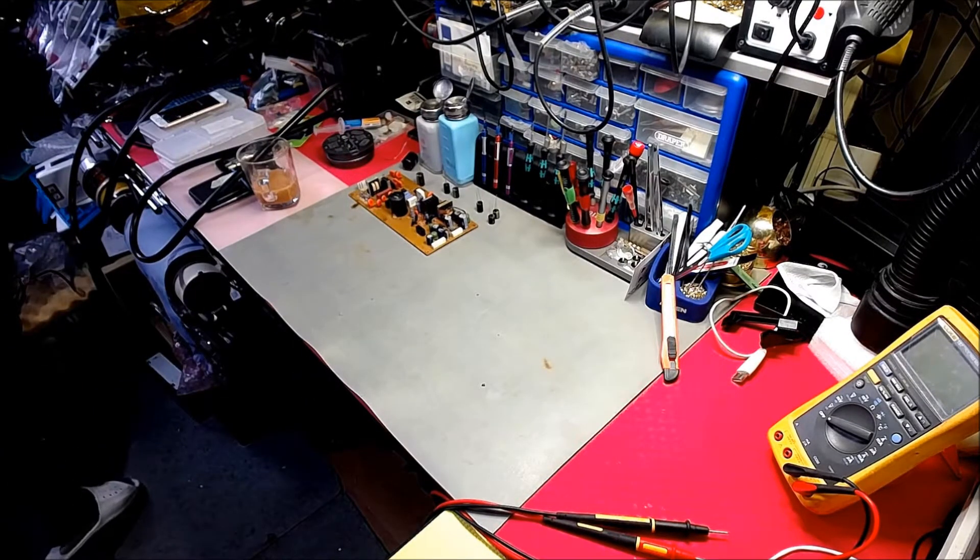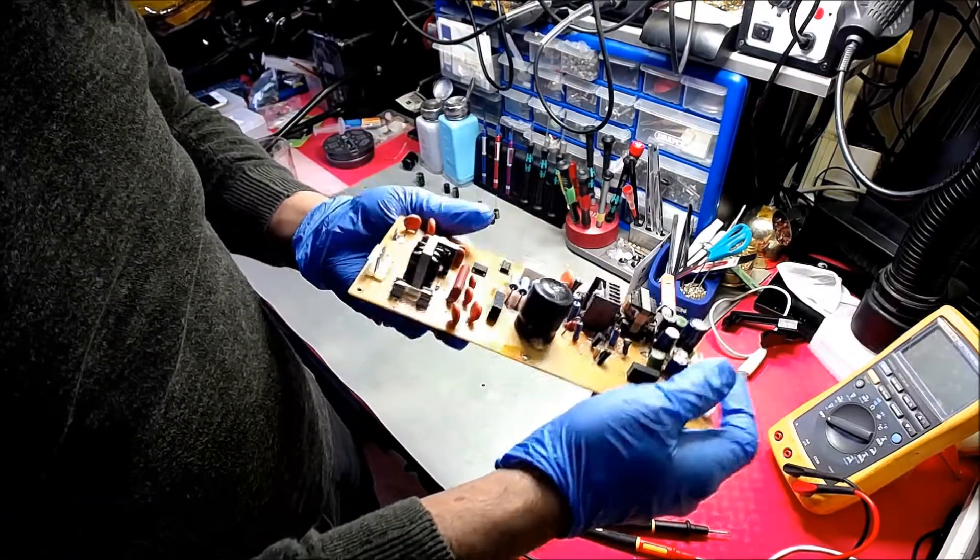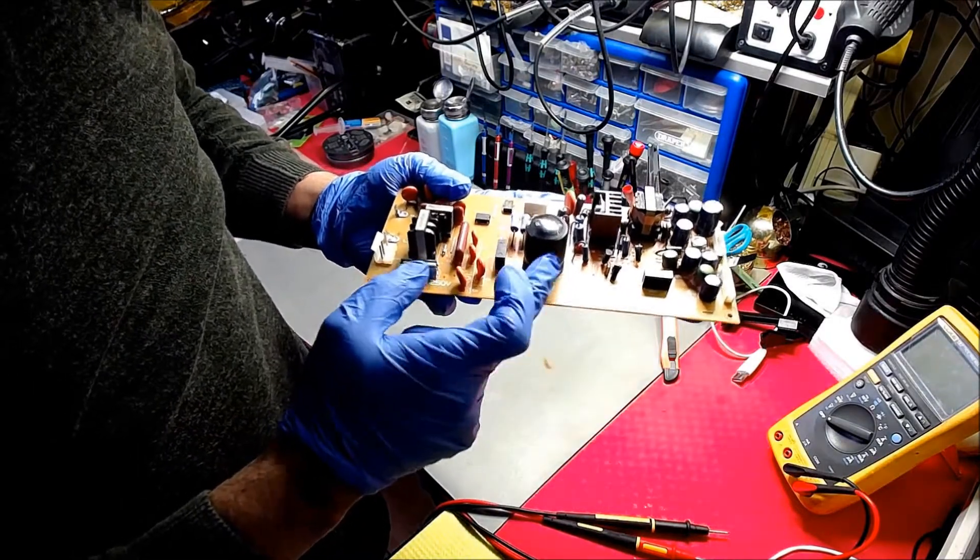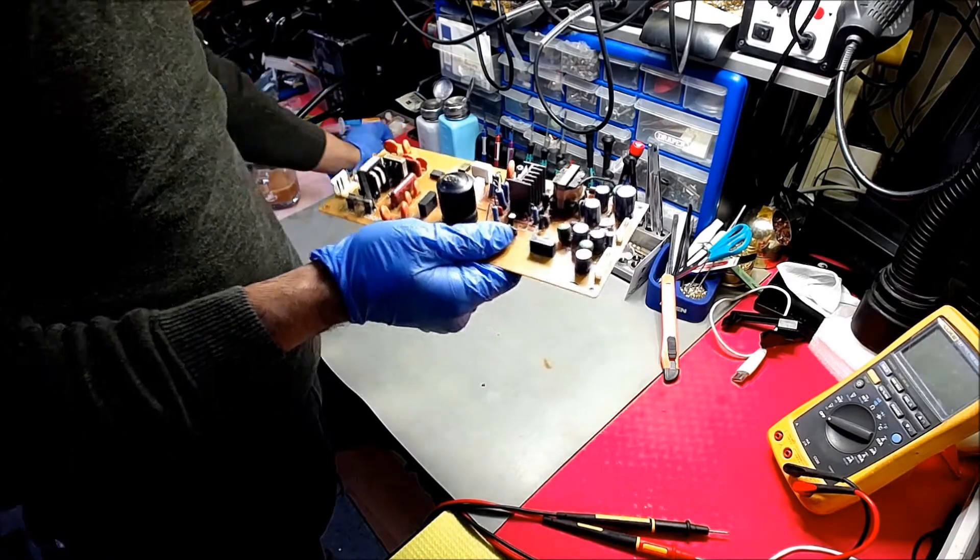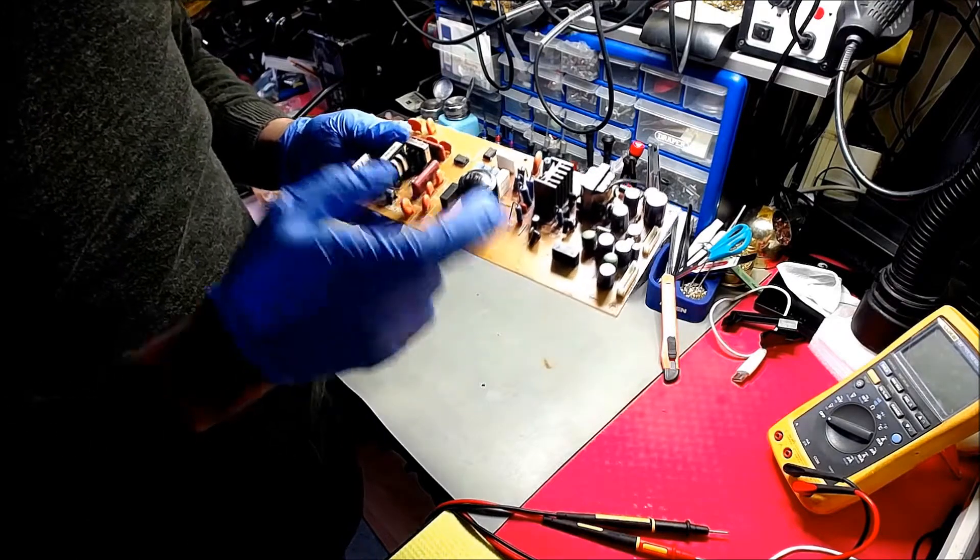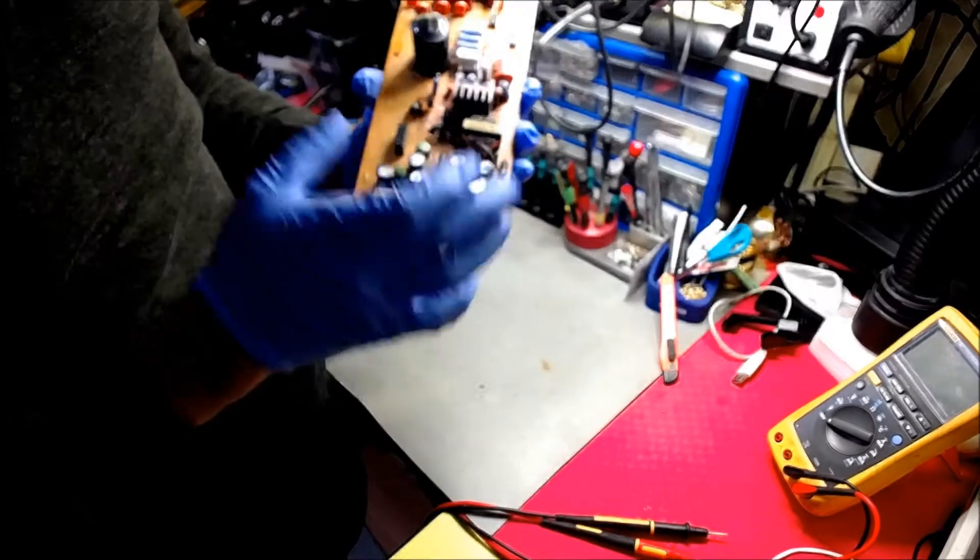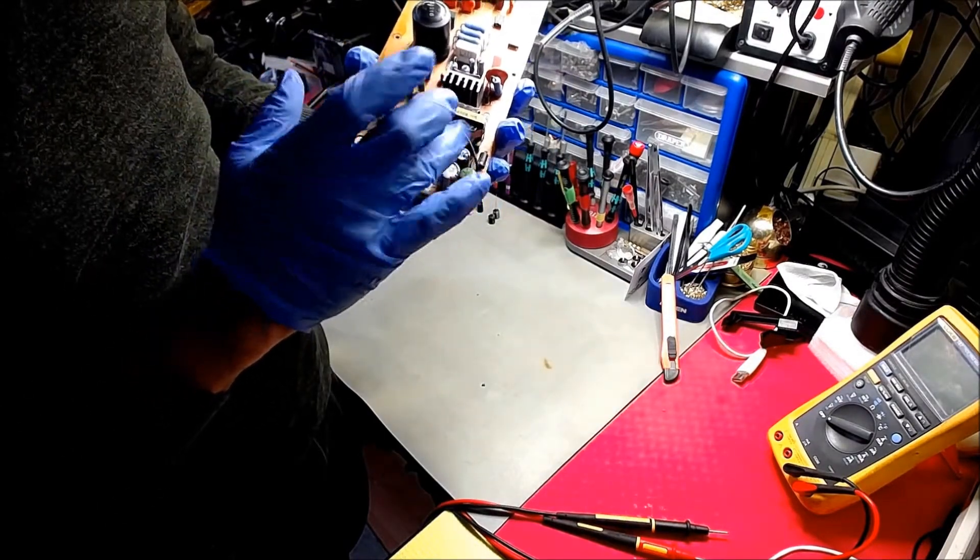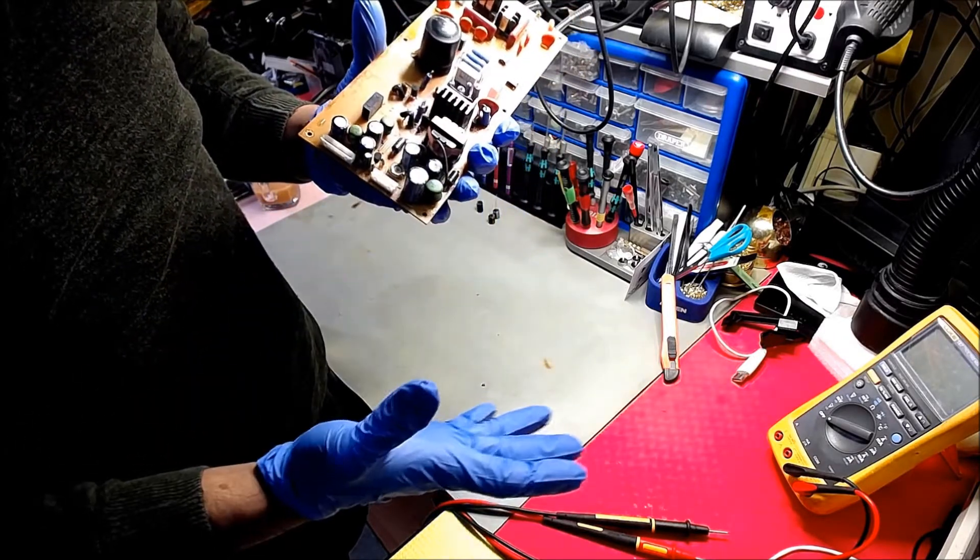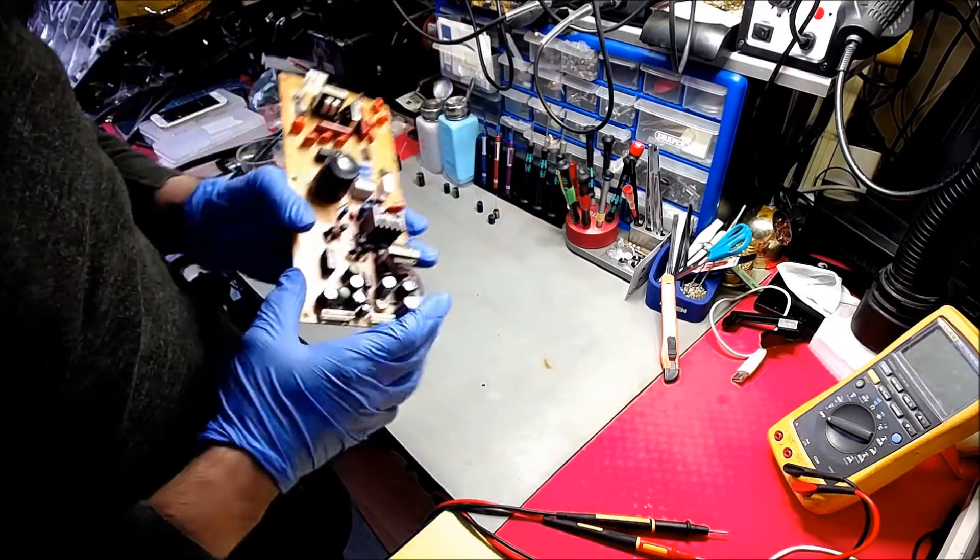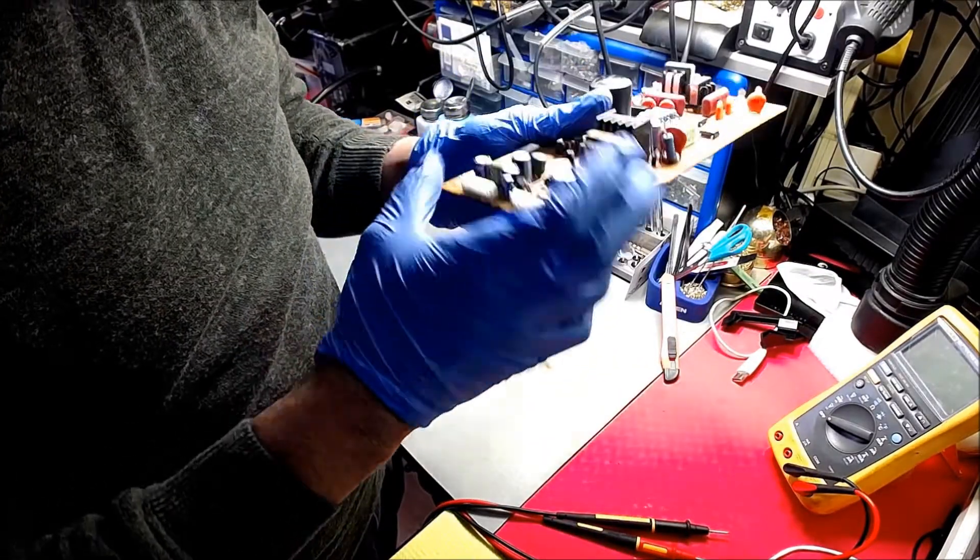I've already taken the power supply board out and as you can see, that's bloated. This is 68 microfarad 400 volt, it's all bloated and leaky. Also, because of the age of the board, these capacitors, although they're not bloated, the ESR equivalent series resistance within the capacitor may be bad. So I'm going to order the lot and get them replaced.